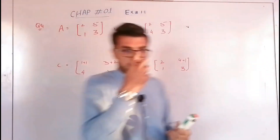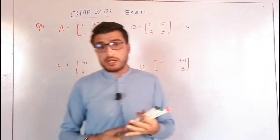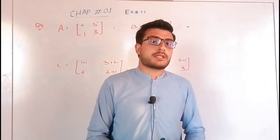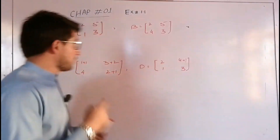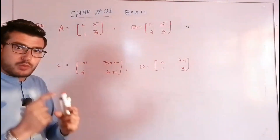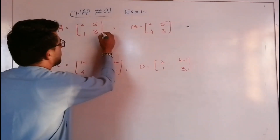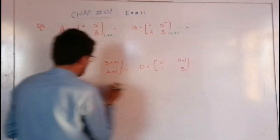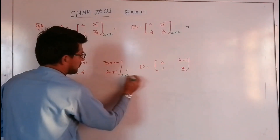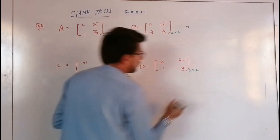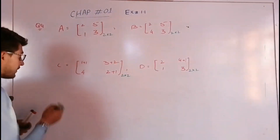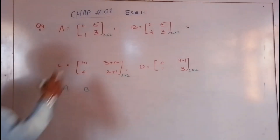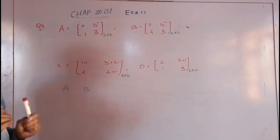We have matrices A, B, C, and D. The order of A is 2 by 2, and the order of B is also 2 by 2. The order of C and D are also 2 by 2. When comparing A and B, the order is the same. However, equal order alone is not sufficient — the conditions are not equal just from order.